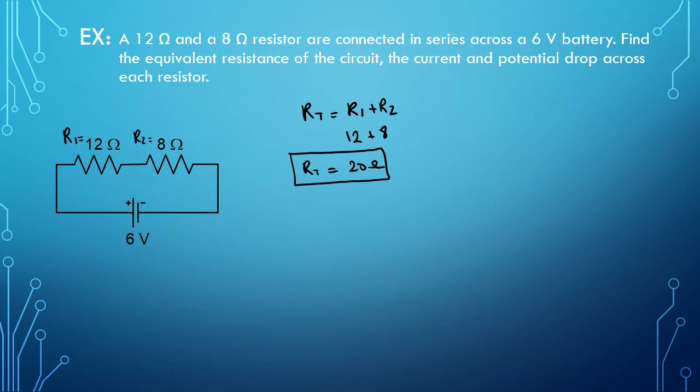Let's apply the ohm's law for the total values. I total is equal to V total over R total. So this would be equal to 6 volt divided by 20 ohms. And that would be 0.3 amp.